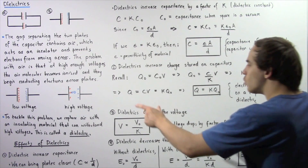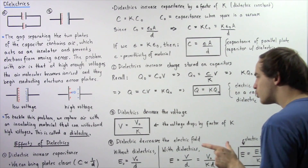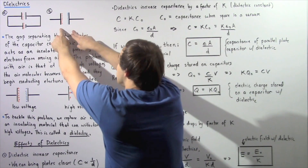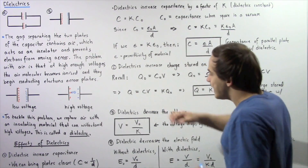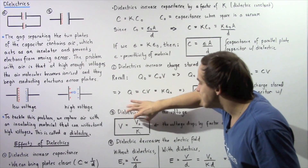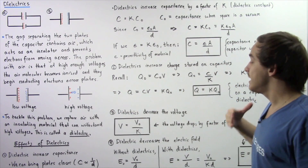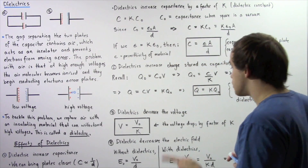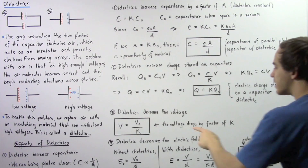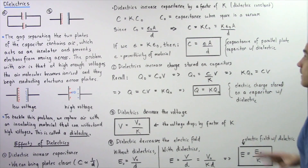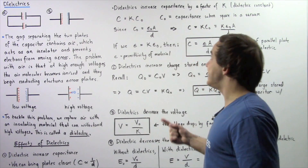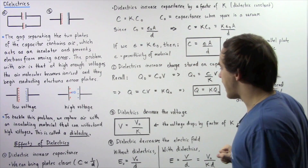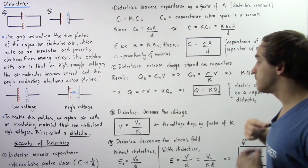The third effect is that dielectrics decrease the voltage. The voltage between the two plates when there is a dielectric is equal to V0 divided by K, where V0 is the voltage when there is a vacuum between the plates. So with the dielectric, the voltage drops by a factor of K. To summarize so far: capacitance increases by a factor of K, charge increases by a factor of K, and voltage drops by a factor of K.